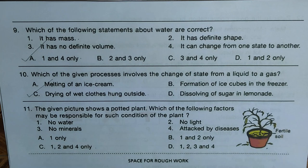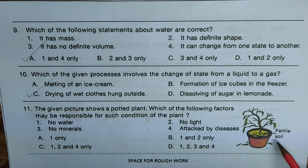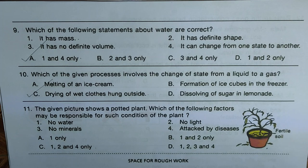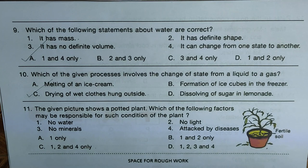Question eleven: the given picture shows a potted plant — its leaves have fallen off, it has dried up, there is no fruit and no flower. The plant may be affected by disease or by missing necessary conditions. The possible factors are: 1 — no water; 2 — no light; 3 — no minerals; 4 — attack by disease. No water and no light are very powerful reasons. Among the options, only C contains options 1, 2, and 4, so we mark C as the correct answer.